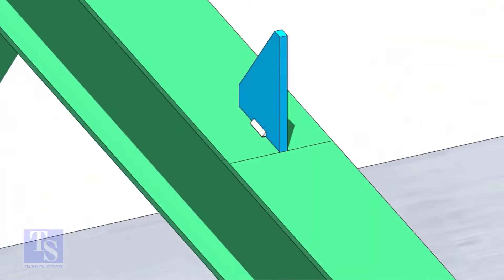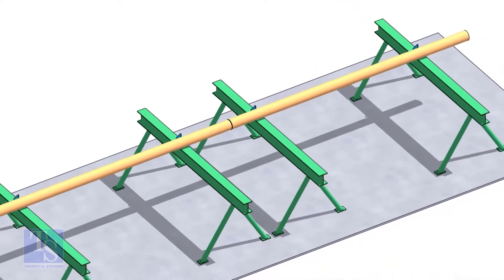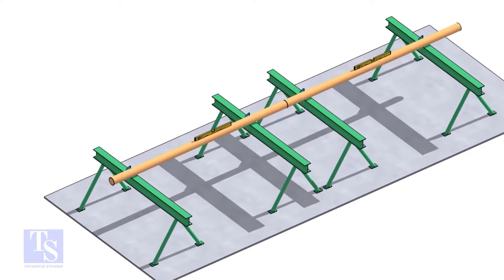Put the pipes on the stands, touching the stopper plates, as shown. The joint shall be in between the supports. Now the pipes are already straight, horizontally and vertically.